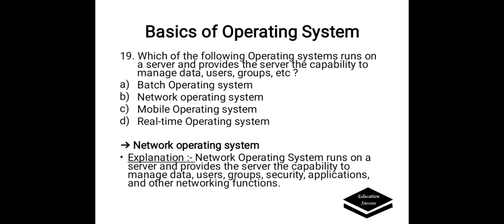Which of the following operating system runs on a server and provides the server the capability to manage data, users, groups, etc.? Options are A. Batch operating system, B. Network operating system, C. Mobile operating system, D. Real-time operating system. The correct answer is B, Network operating system. Network operating systems run on a server and provide the server the capability to manage data, users, groups, security, applications, and other networking functions.